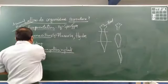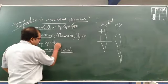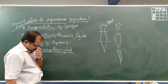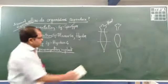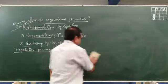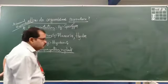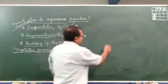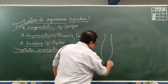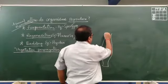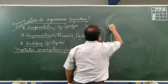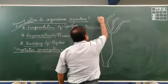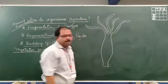Next is budding. The example for budding is hydra. Hydra is a water animal with a long body structure. Around the mouth portion it has long hair-like projections called tentacles. This is hydra.